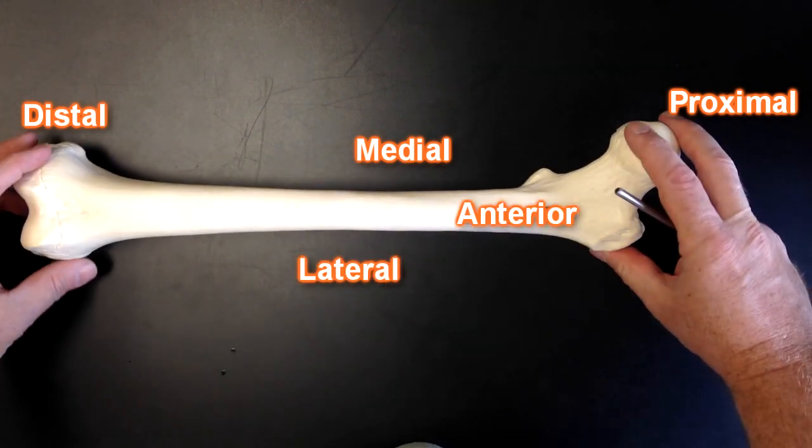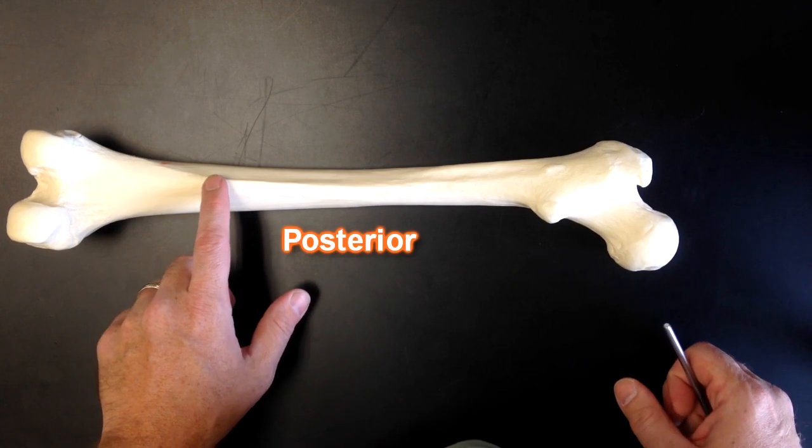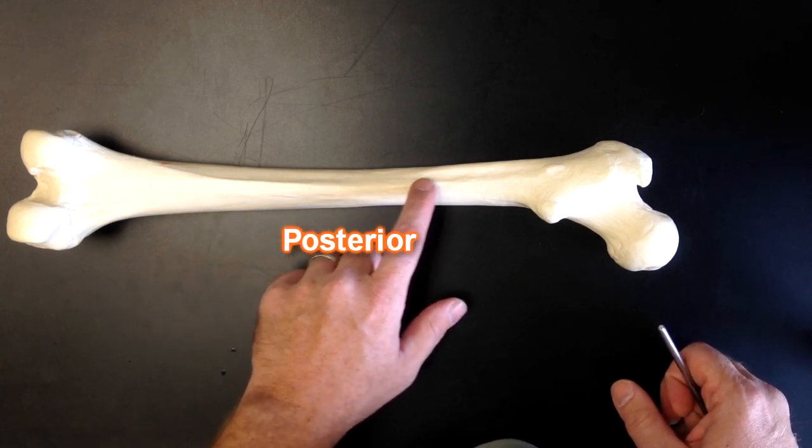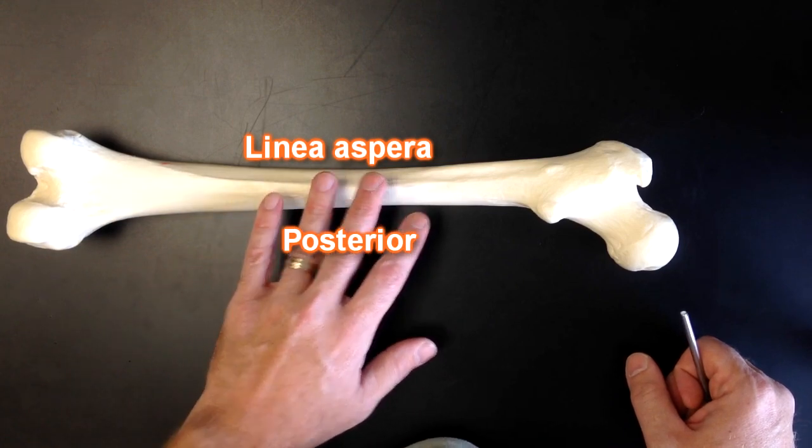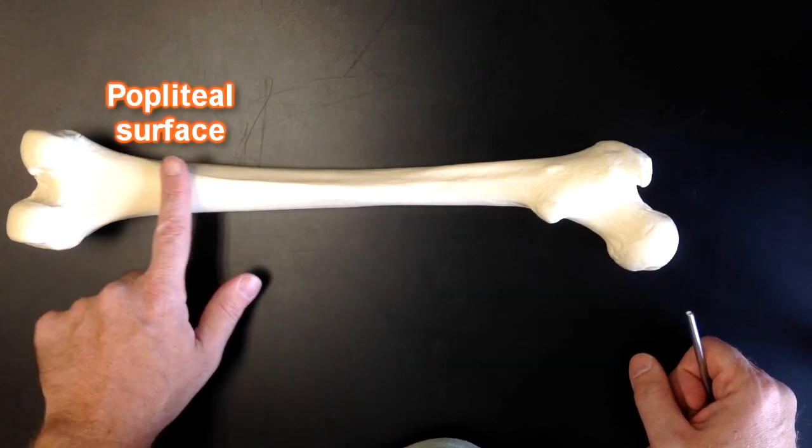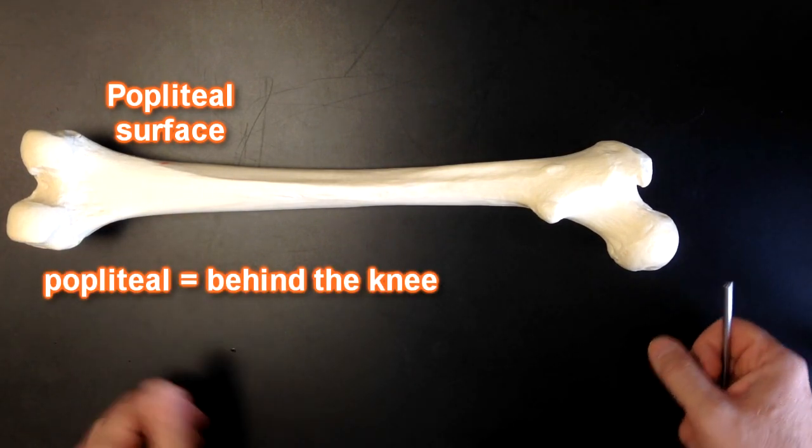Anterior, and then the posterior surface of the femur is going to look like this and it has this nice line up the back of it known as the linea aspera that's on the back. Also, the popliteal surface is back here as well and that's behind the knee. Popliteal literally means behind the knee.